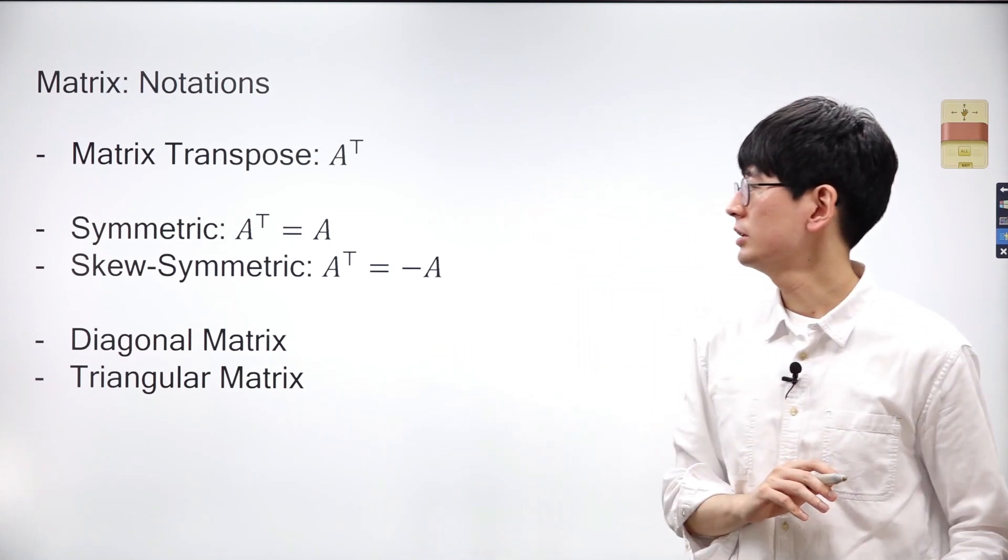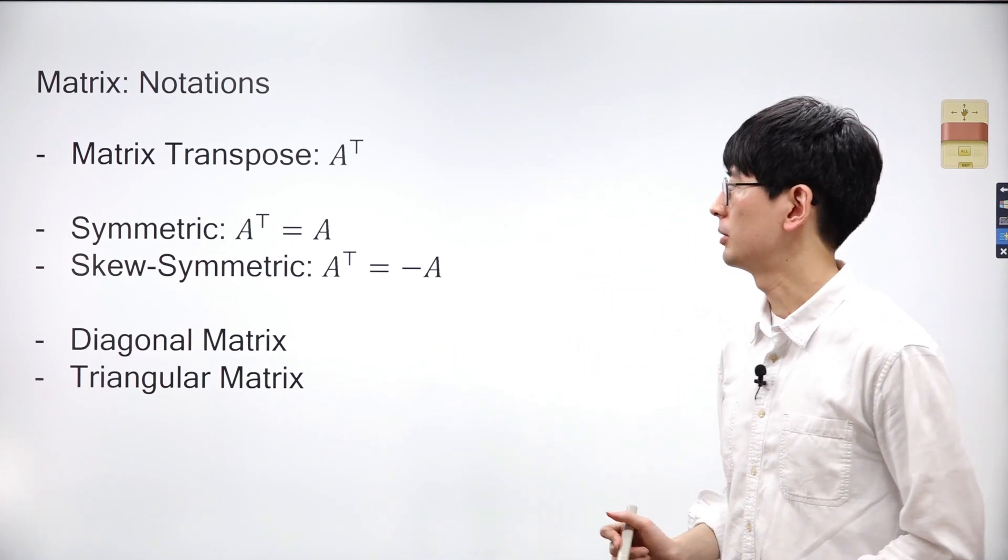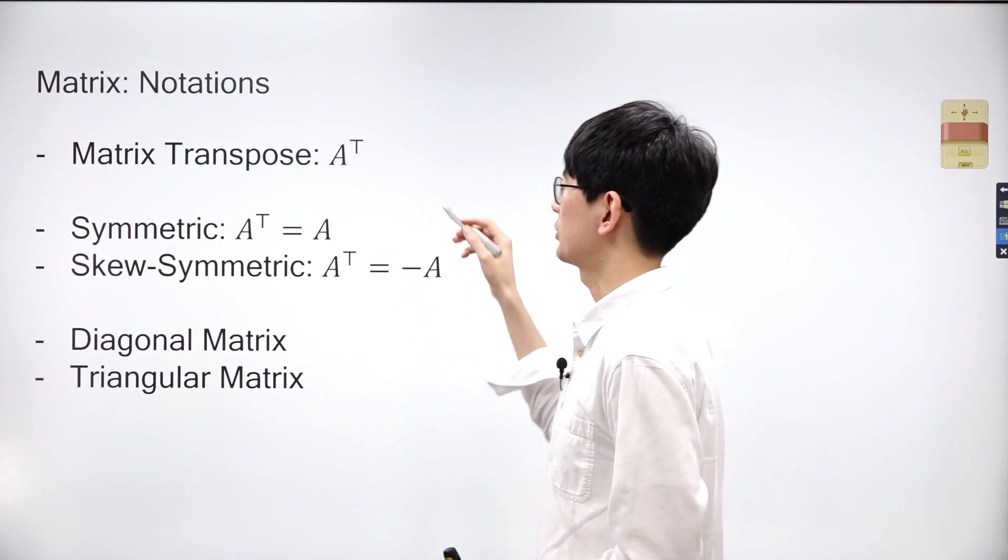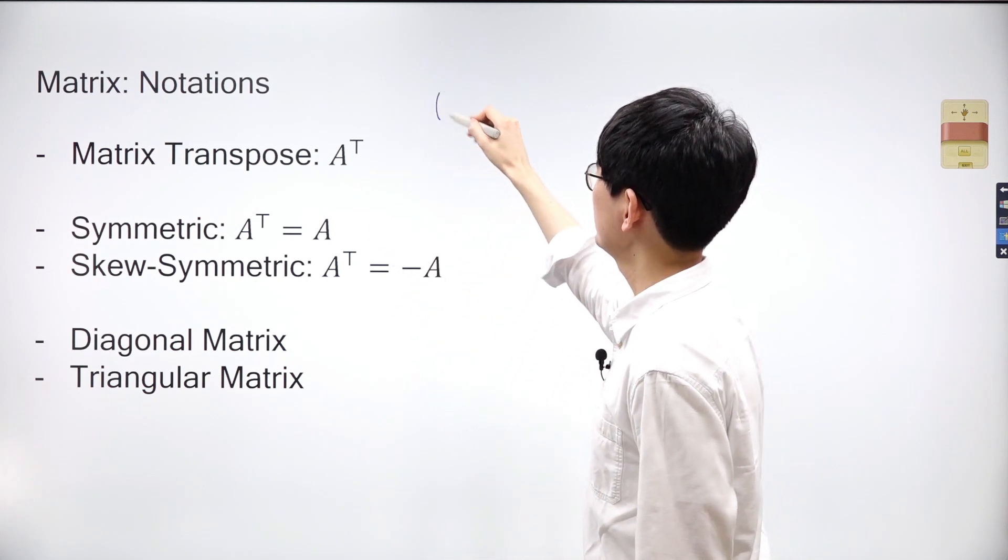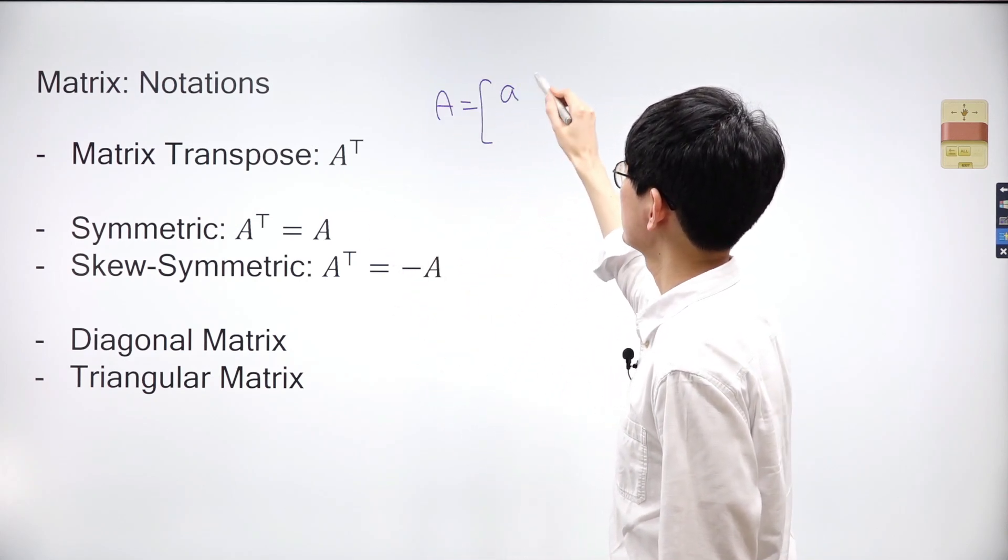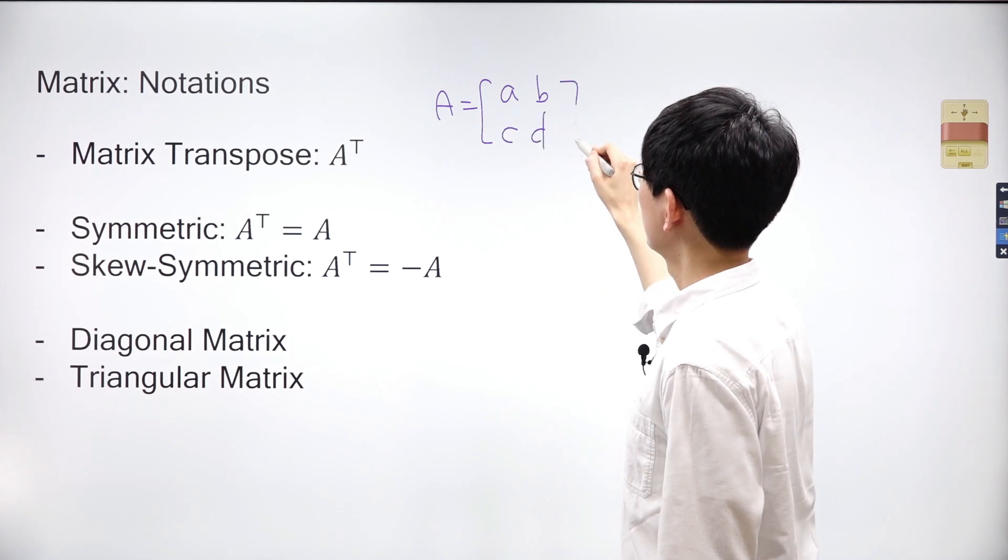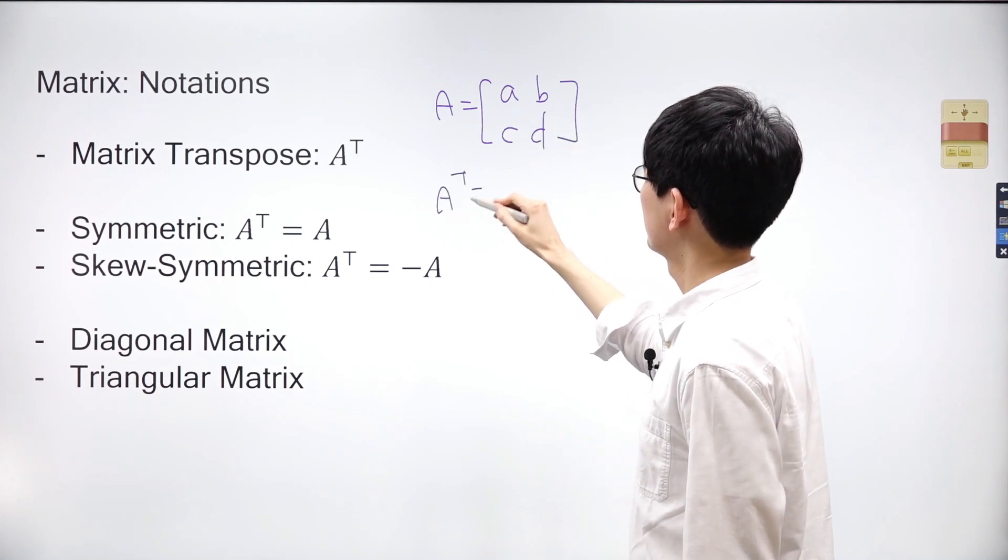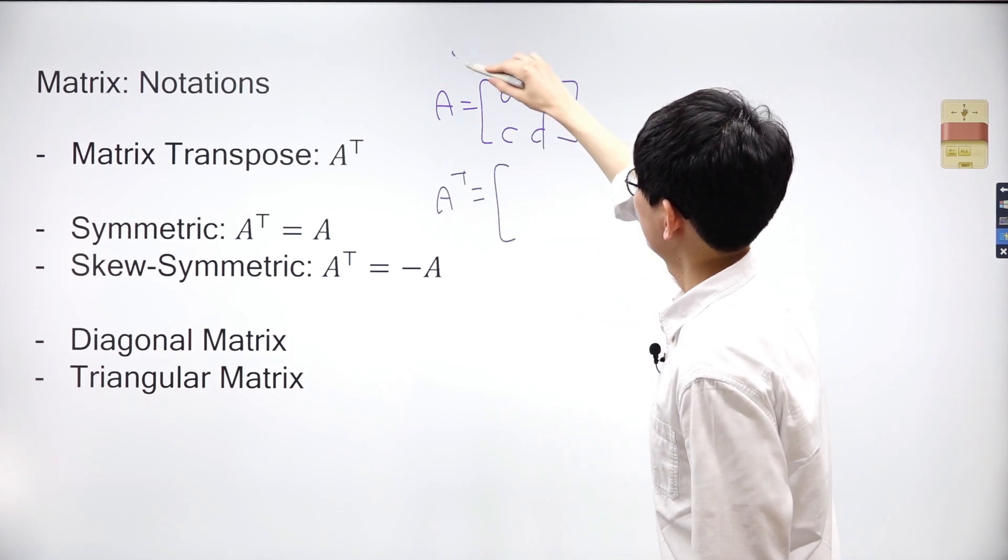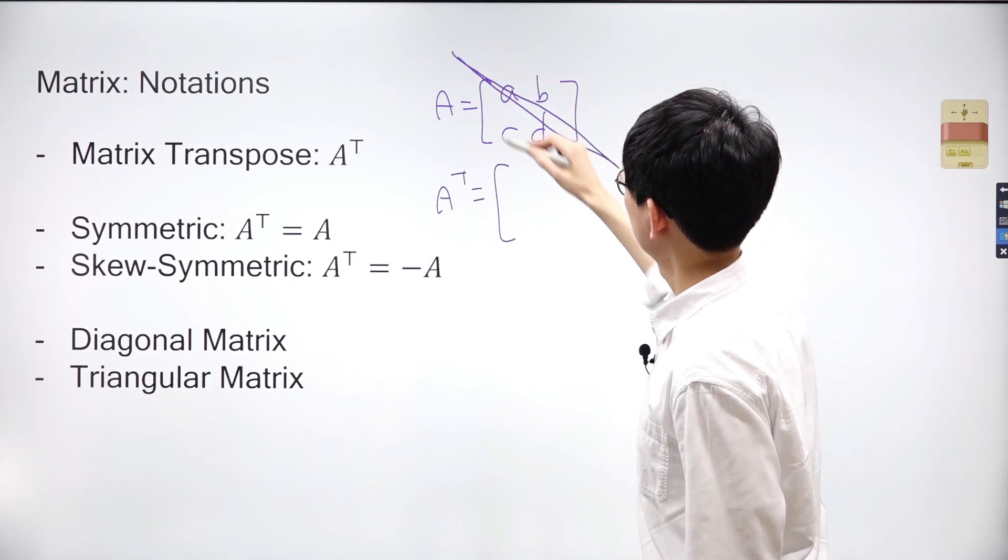If you have prior experience with linear algebra, you might recognize some of these terms on the board. Let A be a 2 by 2 matrix with values a, b, c, and d. The transpose of matrix A is obtained by interchanging its rows and columns.